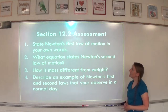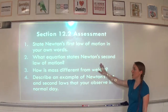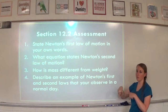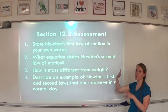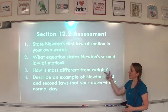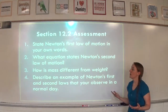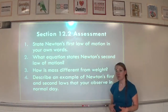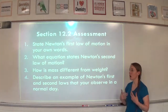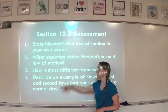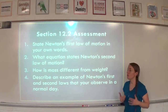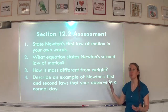What equation states Newton's second law of motion? That is: acceleration (A) equals force (F) over mass (M), or A = F/M — that's the formula we were using earlier. How is mass different from weight? Mass is the amount of matter an object contains. Weight is a measure of the pull of gravity on an object. Weight is based on gravity — you can remember that because weight has a G in it, think of gravity.